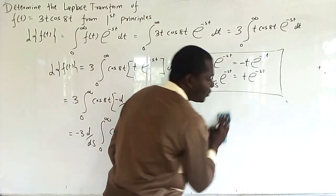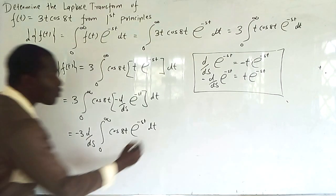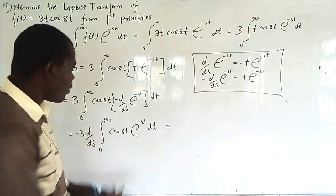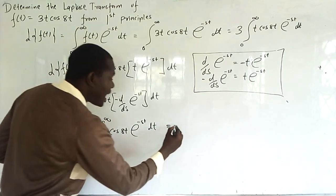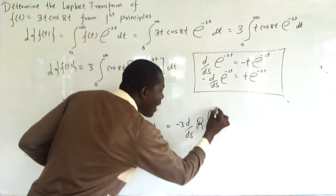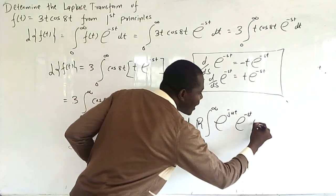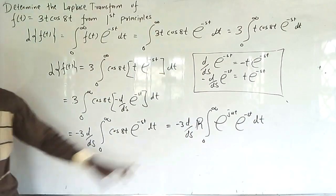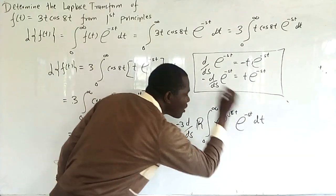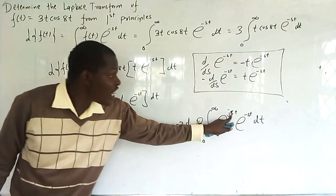Having done that, we can now integrate this — meaning we get rid of cosh(t). Since cosh is the real part of Euler's equation, when you get rid of cosh(t) we take the real part. We write: -3·d/ds of the real part of the integral from 0 to infinity of e^(jat)·e^(-st) dt, where our a is 8.